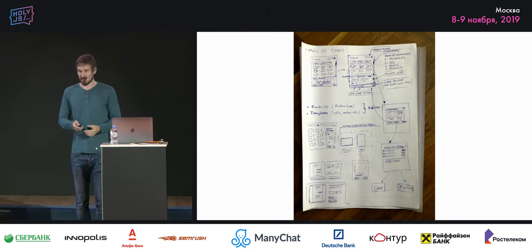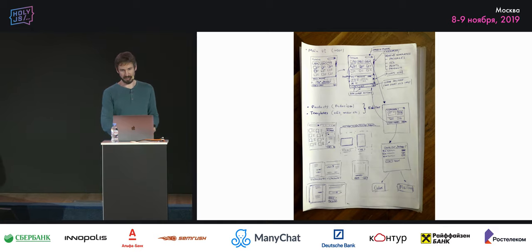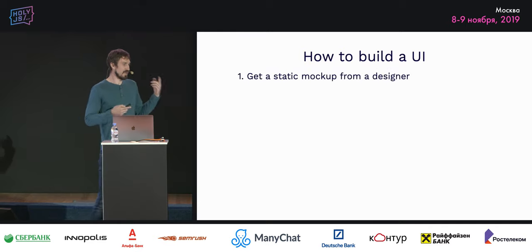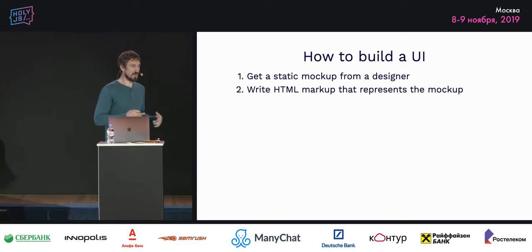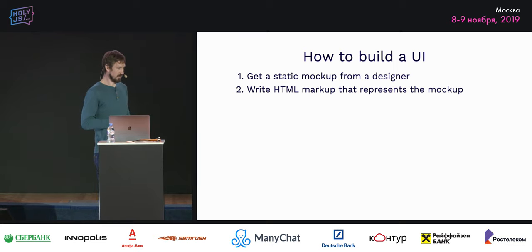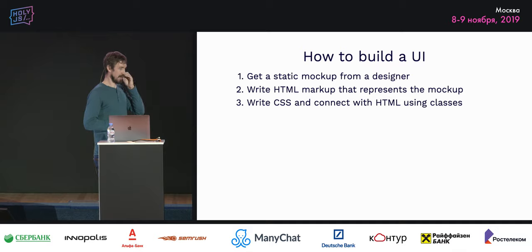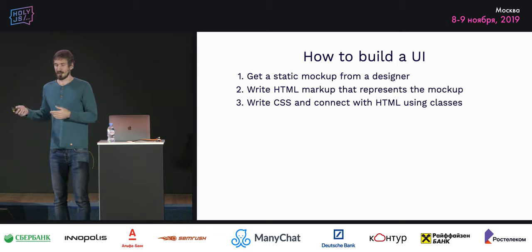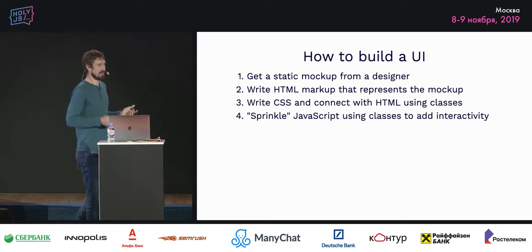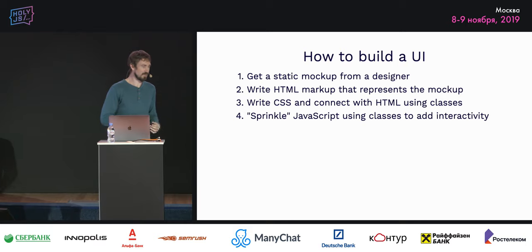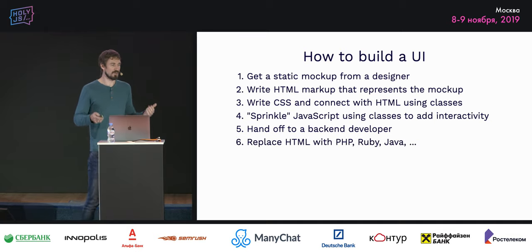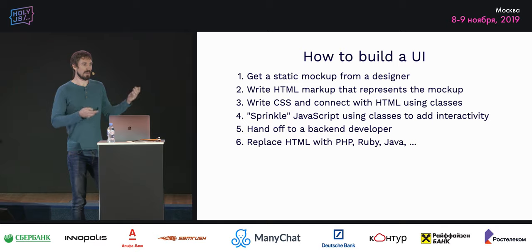Looking at that picture, I was remembering how we used to build user interfaces. So: get a static mockup from a designer, write some semantic HTML markup representing the mockup. Spend time writing HTML, then spend a lot of time styling it — writing CSS connected to HTML using class attributes. Then sprinkle some JavaScript on top. We'd sprinkle JavaScript on top of everything with jQuery, then hand off to the back-end developer, who would replace HTML with PHP, Ruby, Java, or even JavaScript again using some other syntax.